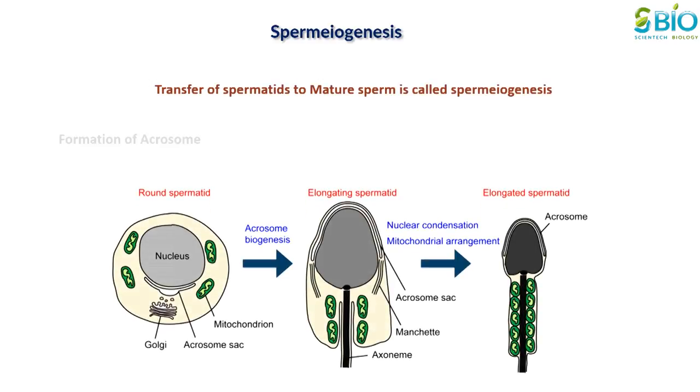Many changes occur within the spermatid cells. The three major ones being formation of the acrosome which covers the cranial part of the head. The acrosome contains hydrolytic enzymes to allow fusion of sperm and egg for fertilization.